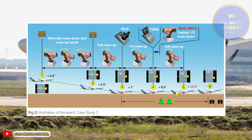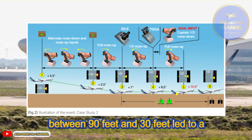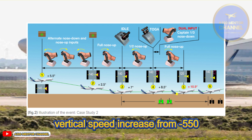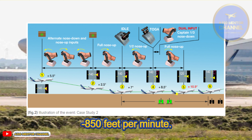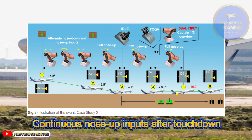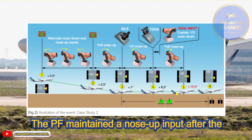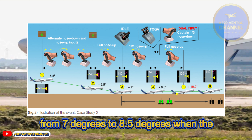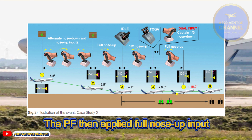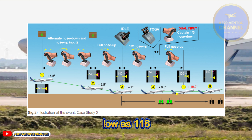Event Analysis – Hard landing caused by nose-down tendency at 30 feet and a late flare. The alternating nose-up and nose-down inputs between 90 feet and 30 feet led to a vertical speed increase from minus 550 feet per minute at 90 feet up to minus 850 feet per minute at 30 feet when the PF started the flare. This late flare combined with the high vertical speed led to the hard landing. The PF maintained nose-up input after touchdown, leading pitch to increase from 7 degrees to 8.5 degrees when the go-around was initiated. The PF then applied full nose-up input simultaneously with TOGA selection while speed was as low as 116 knots, V-app minus 23 knots, causing the tail strike.